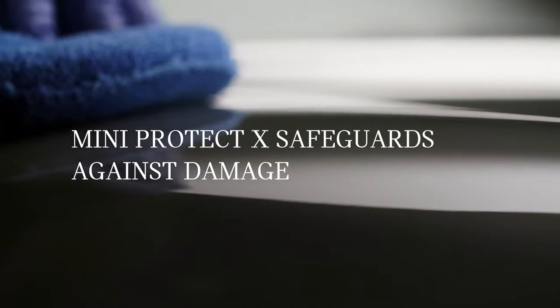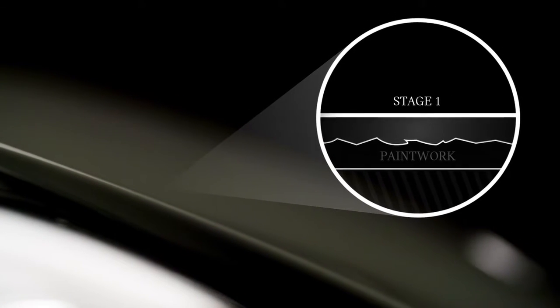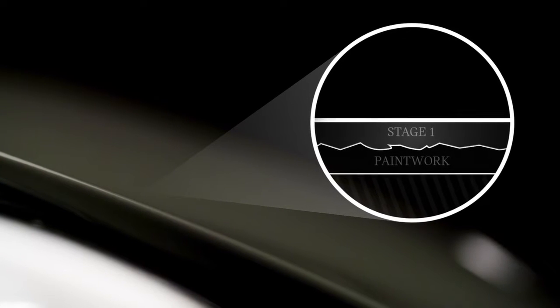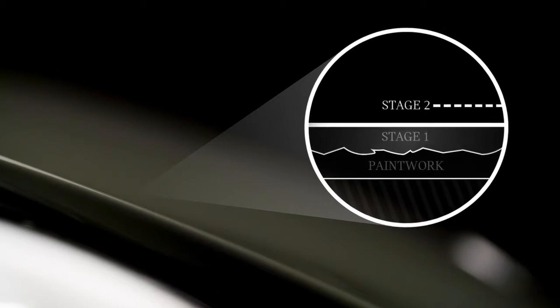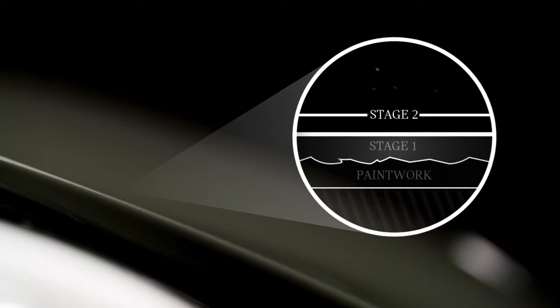The MINI Protect X paintwork product is suitable for both new and approved used cars, and is applied in two stages. Firstly, our trained experts clean and apply the pre-seal formulation, penetrating the paintwork's pores. The second creates a glossy barrier coat that permanently resists attack from the elements.